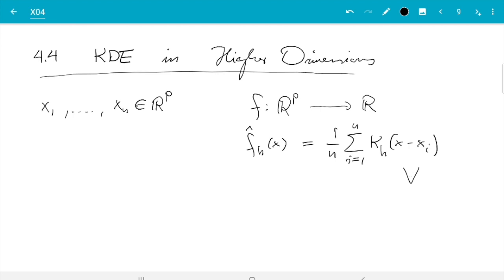So x is a vector, x_i are vectors, so we need now K_h to be a kernel which takes vectors as inputs and still numbers as outputs. So a kernel is now a function K from R^p to R.